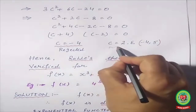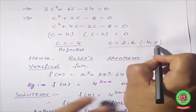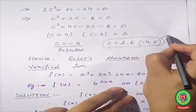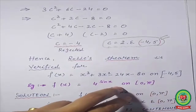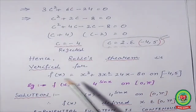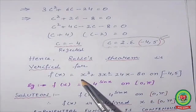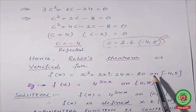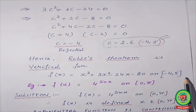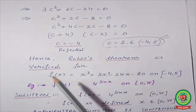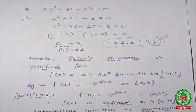Make sure to mention that c belongs to the open interval, because maximum students lose marks from this point. For f(x) = x³ + 3x² − 24x − 80 on the given interval, at the end you must write that Rolle's Theorem is verified.